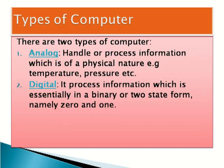Types of computer. There are two types of computer: analog computer and digital computer. Analog computers handle or process information which is of physical nature, for example temperature and pressure. Digital computers process information which is in a binary or two-state form, namely zero and one.